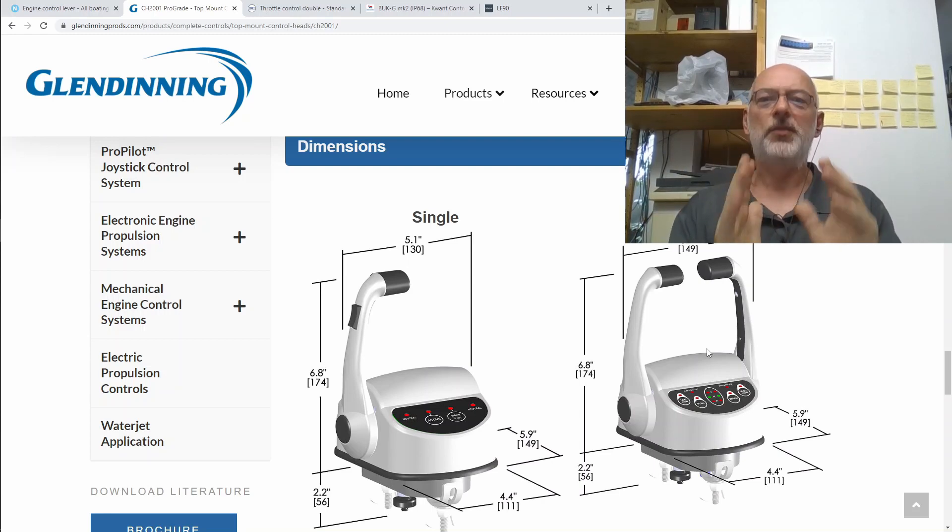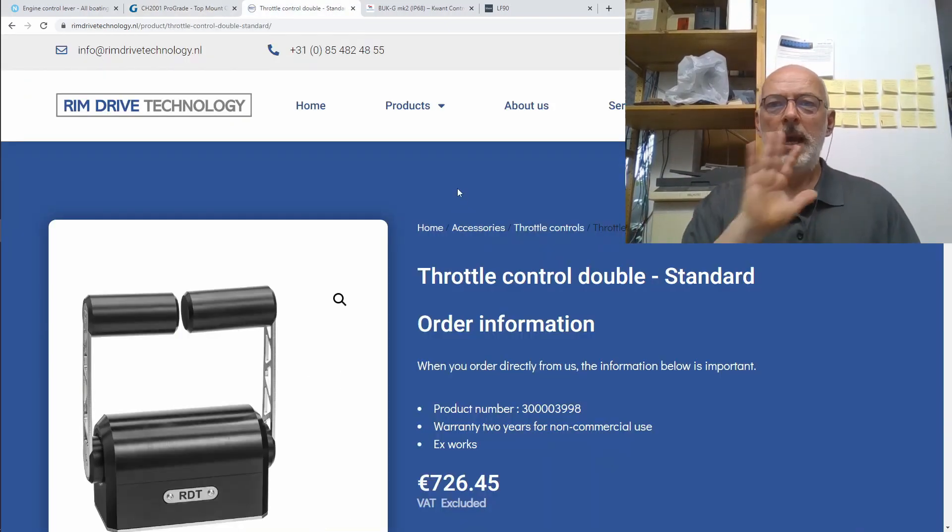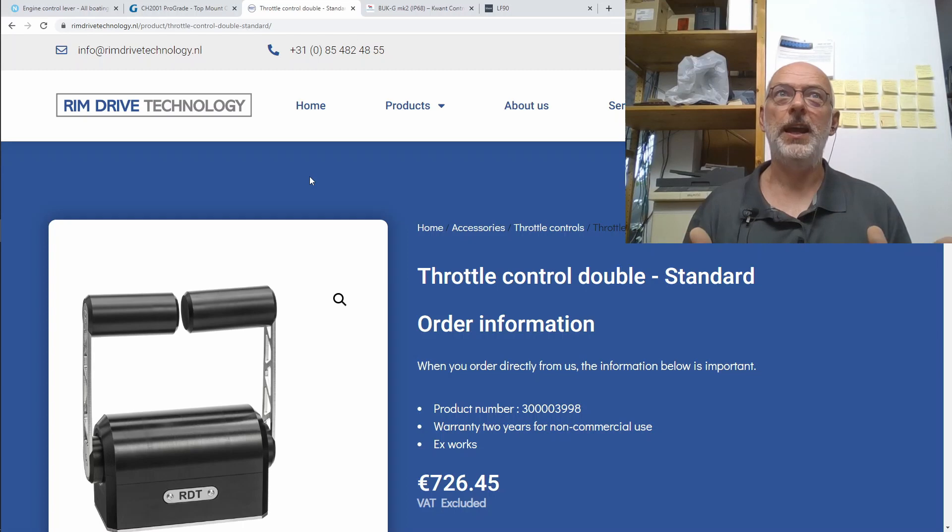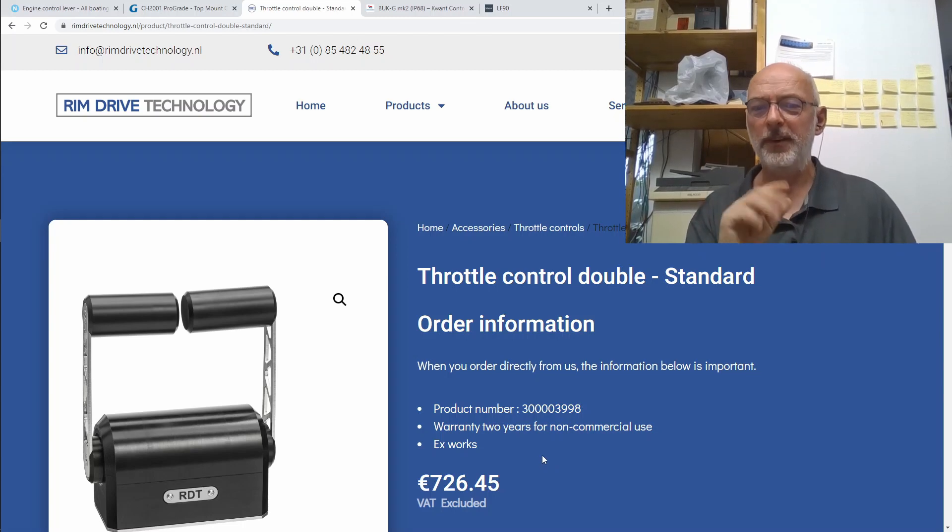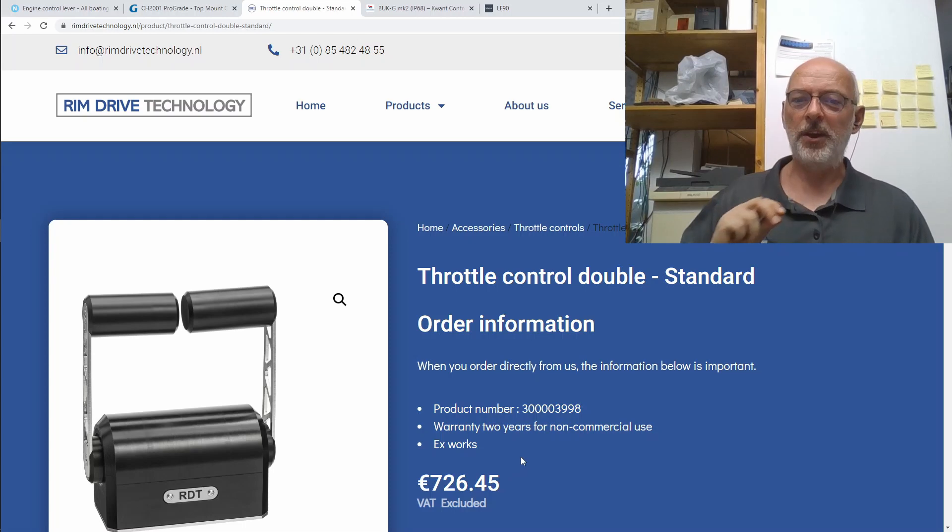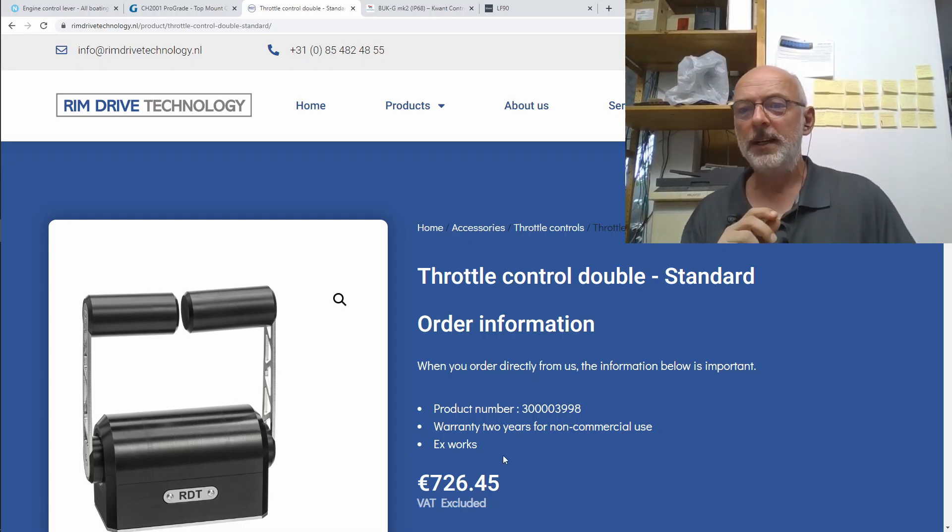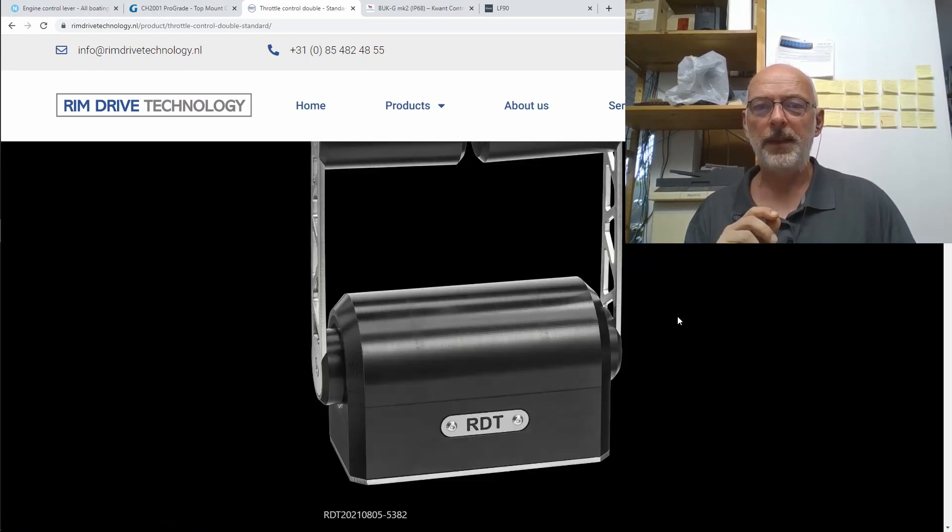Here we have another example from Rimdrive Technology, which incidentally sells everything around electric propulsion of boats. Their dual throttle control is much cheaper, still extremely expensive but cheaper at about 730 euros plus tax. I could actually go with that design of their throttle - nice and simple.